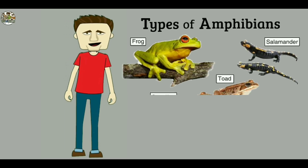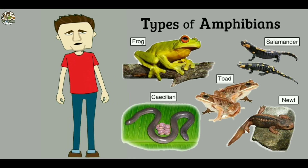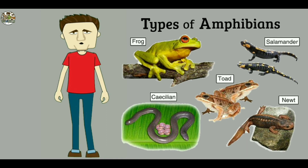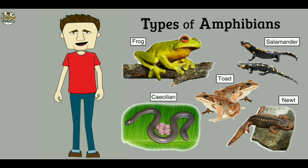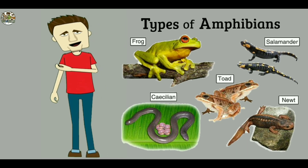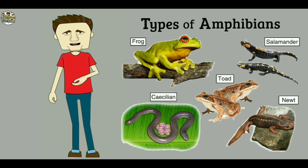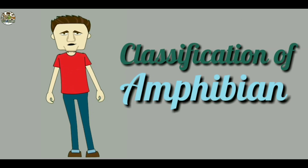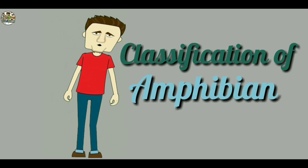The greatest event in phylogenetic history is the transition from aquatic to terrestrial mode of life. Amphibians are the first vertebrates to attempt this transition. Today we are going to discuss the classification of amphibians.